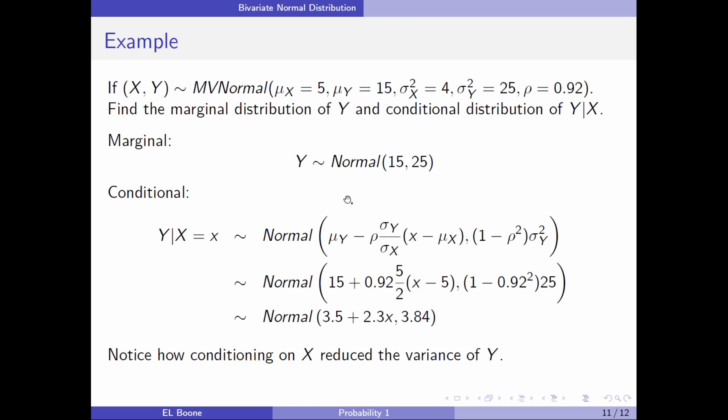Now the conditional takes a little bit of extra work, because now I have to plug in all these other numbers. When I plug them in here, I get 15 plus 0.92 over 5, or 5 halves, times x minus 5. And then I have the variance, which is 1 minus 0.92 squared times the variance of y. When I work this out, you can see you get 3.5 plus 2.3x. That looks exactly like a line.